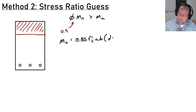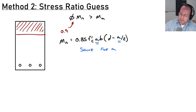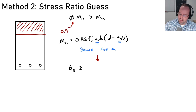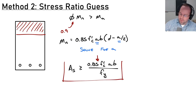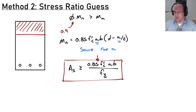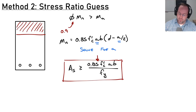The moment arm is the same as before — d minus a over 2. Substituting this expression into Mn and solving for a, then knowing a I can substitute into a second expression to get area of steel: As must be greater than 0.85 f'c · a · b divided by fy, which comes from balancing tension and compression forces for equilibrium. This expression is often presented in different forms, and my favorite is the reinforcement ratio version.